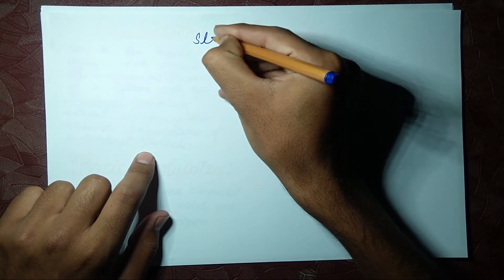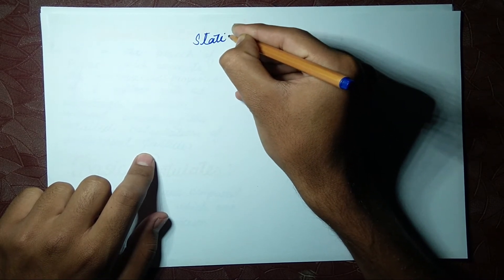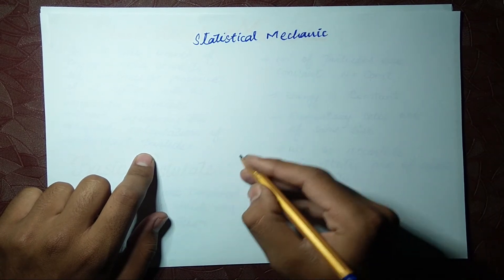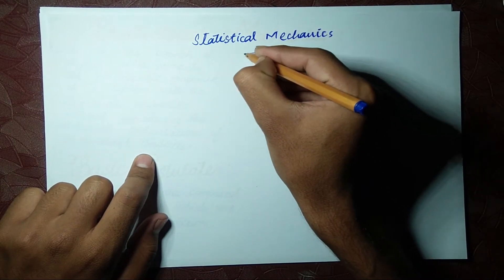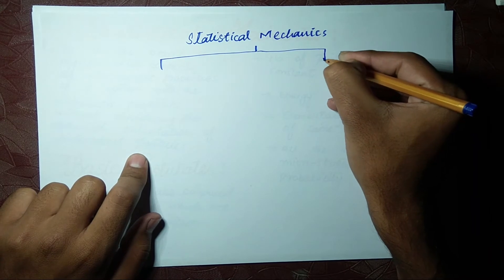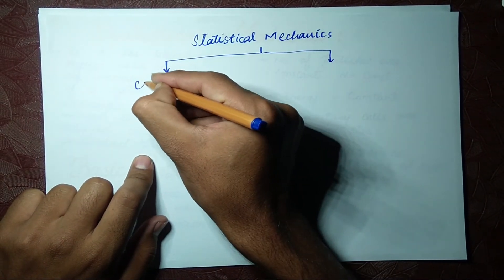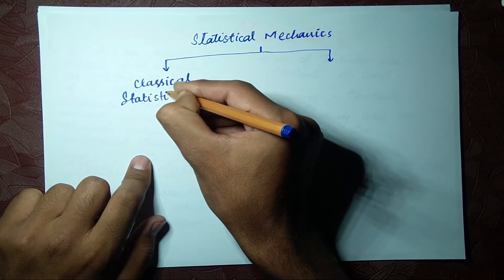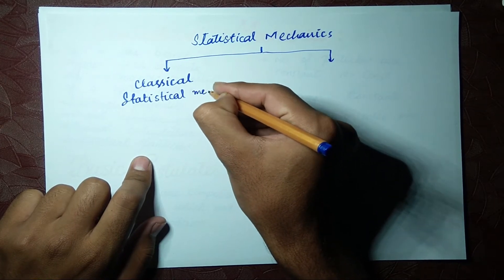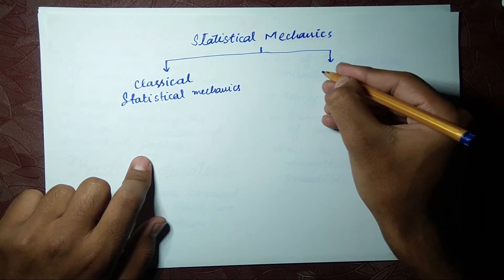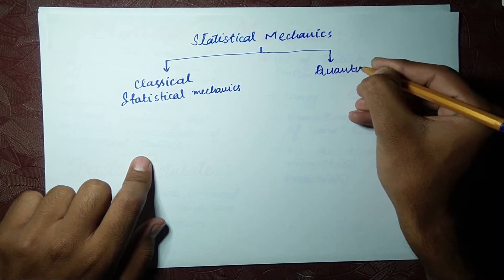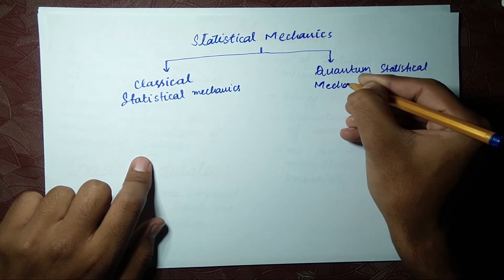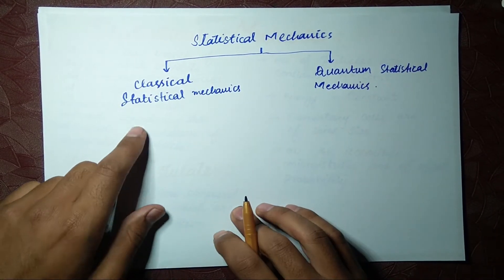First I will write that we have statistical mechanics, from which we have two sub-types: one is classical statistical mechanics, and the second one is quantum statistical mechanics. In classical statistical mechanics we deal with...